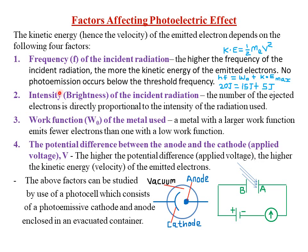The second factor is the intensity or brightness of the incident radiation. The number of ejected electrons is directly proportional to the intensity of the radiation used. The higher the brightness or intensity of the incident radiation, the more the number of ejected electrons. Similarly, the lower the intensity or brightness, the smaller the number of ejected electrons.